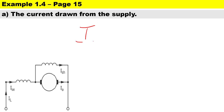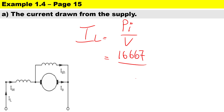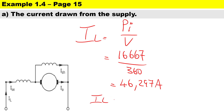To calculate the line current IL drawn from the supply: IL = input power divided by terminal voltage = 16,667 divided by 360, which gives IL = 46.297 amperes. It is important to note that IL is the same as the current through the series winding.